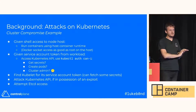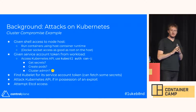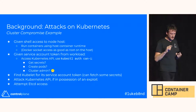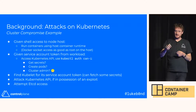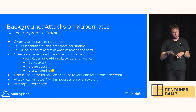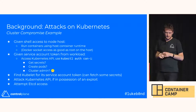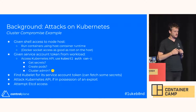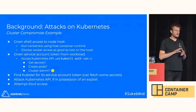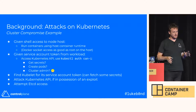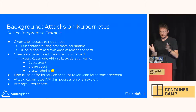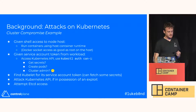Because they're on a host, they'll also try to find the credentials the kubelet uses to talk to the API. If that's on disk, they can do whatever the kubelet can do — such as get secrets, hopefully only for workloads on that node. They may also attack the Kubernetes API itself, or try to access etcd for complete cluster control.